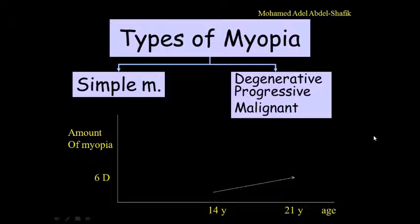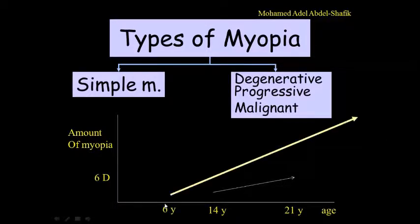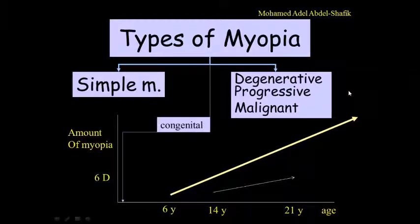On the other hand, degenerative myopia or progressive myopia or malignant myopia starts early and it goes on for the rest of life, reaching higher and higher degrees and is associated with changes, malignant changes or degenerative changes. This is the correct rule.